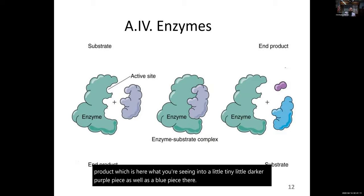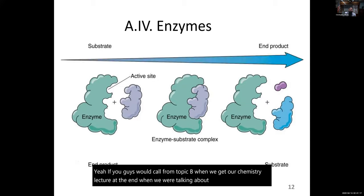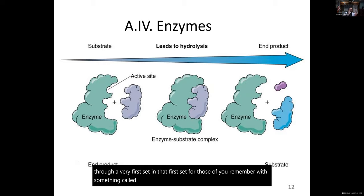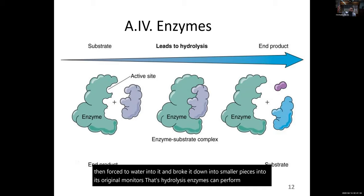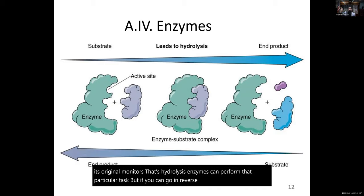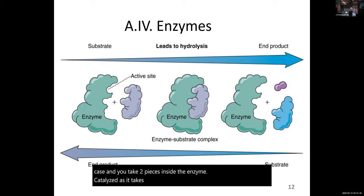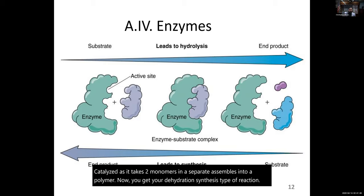If you recall from Topic B during the chemistry lecture, we talked about hydrolysis — taking a polymer, forcing water into it, and breaking it down into smaller monomers. Enzymes can perform that particular task. But if you go in reverse — taking two pieces, putting them inside the enzyme, and the enzyme catalyzes assembling two monomers into a polymer — now you get a dehydration synthesis type of reaction. All the stuff we've been seeing is coming back and becoming useful.